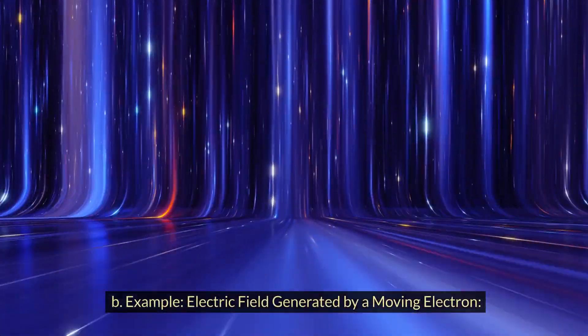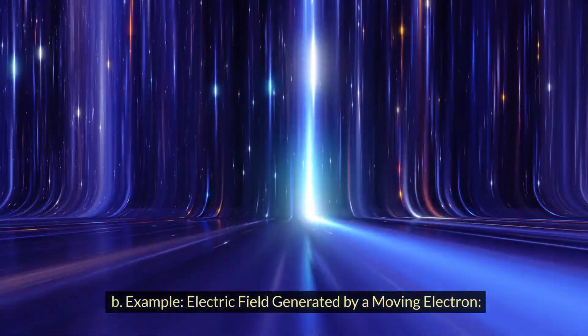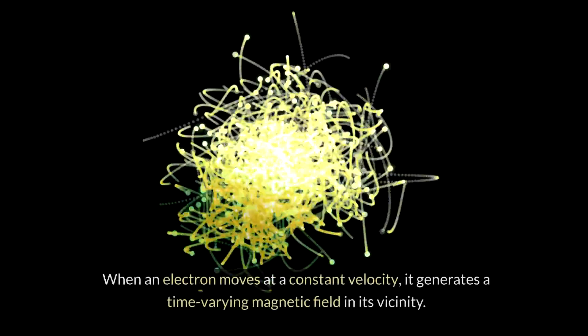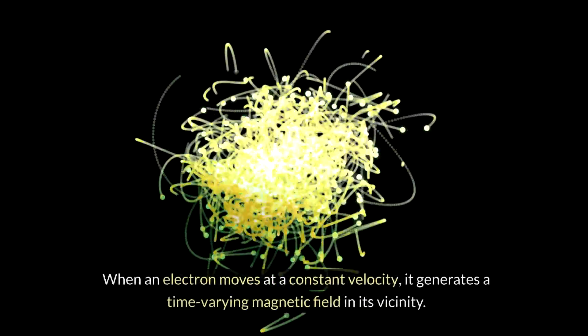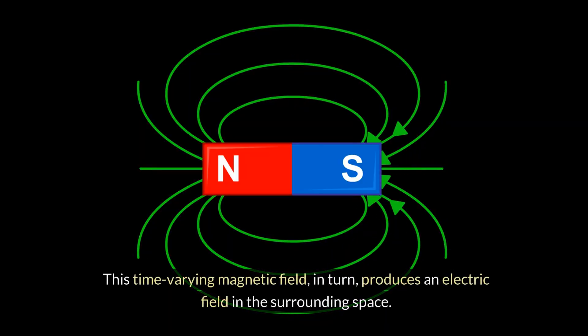Example: Electric field generated by a moving electron. When an electron moves at a constant velocity, it generates a time-varying magnetic field in its vicinity. This time-varying magnetic field, in turn, produces an electric field in the surrounding space.